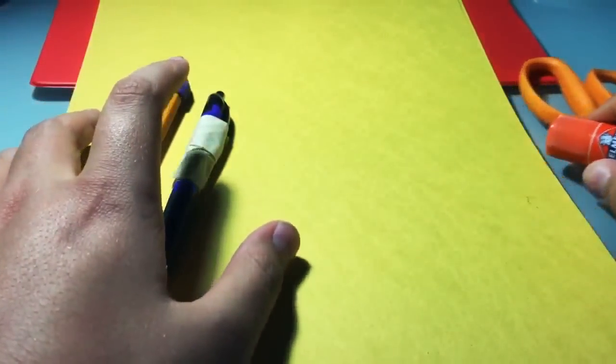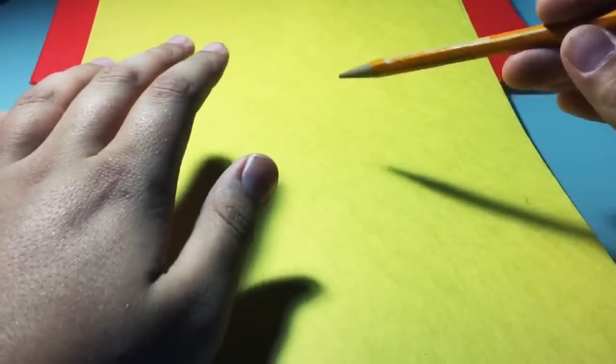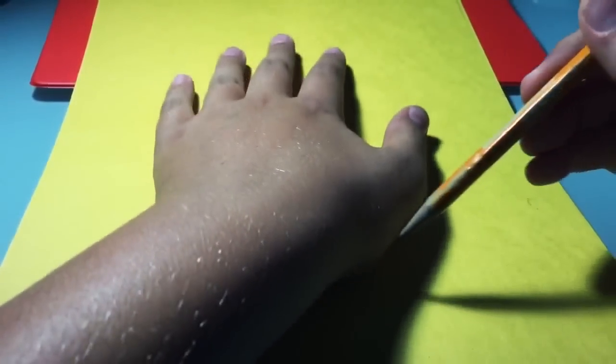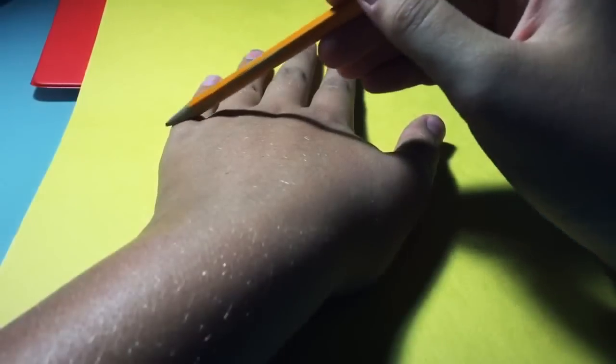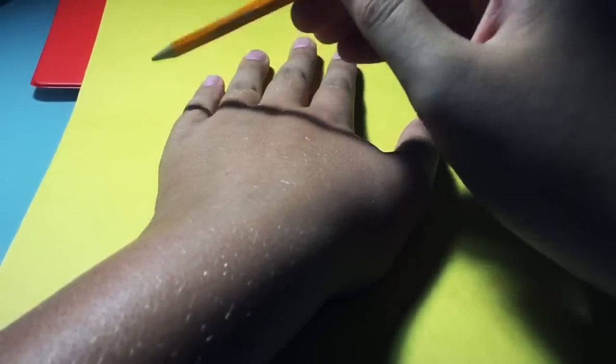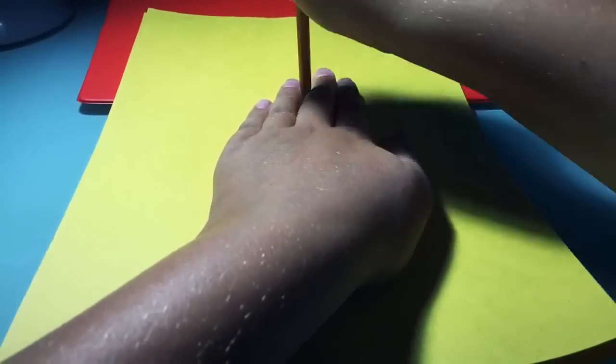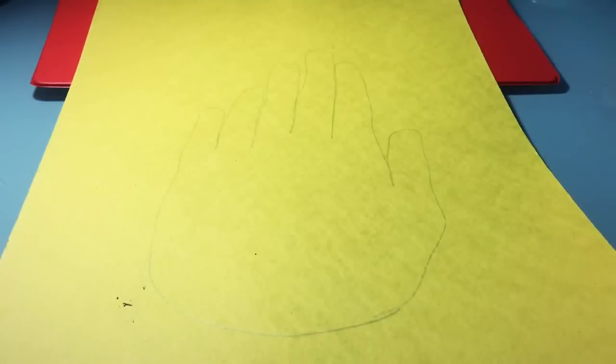We're going to make the six-fingered hand first, and to do that, we're going to start by tracing with the pencil, and then we'll go over it with pen later. And remember, it has six fingers, so you're going to want to trace your hand and then freehandly draw another finger on the side. Then this is the basic outline, and then you're just going to want to adjust it to make it look more like the one in the show.